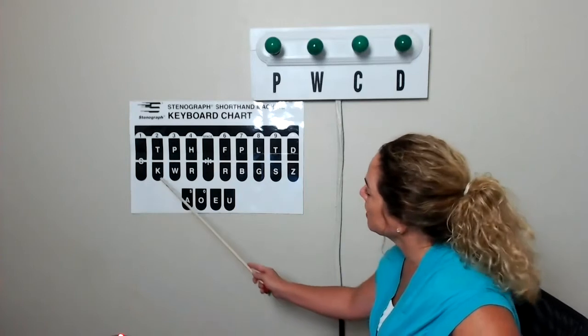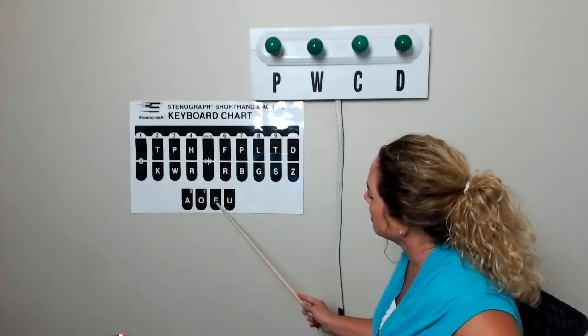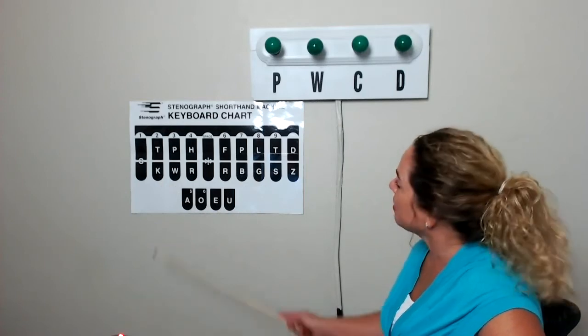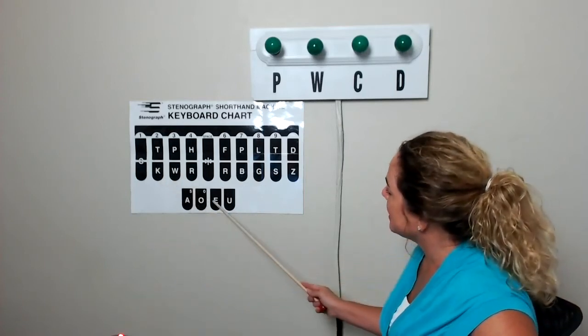See how you did. Number one, cork. K, long O, R, K. Number two, death. D, A, E, G, T.